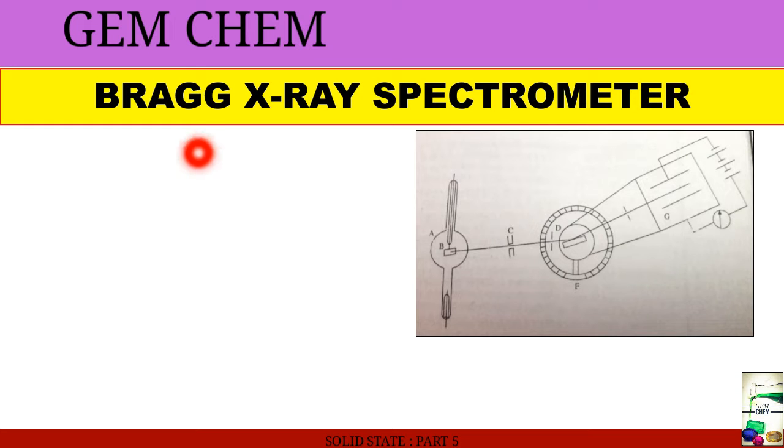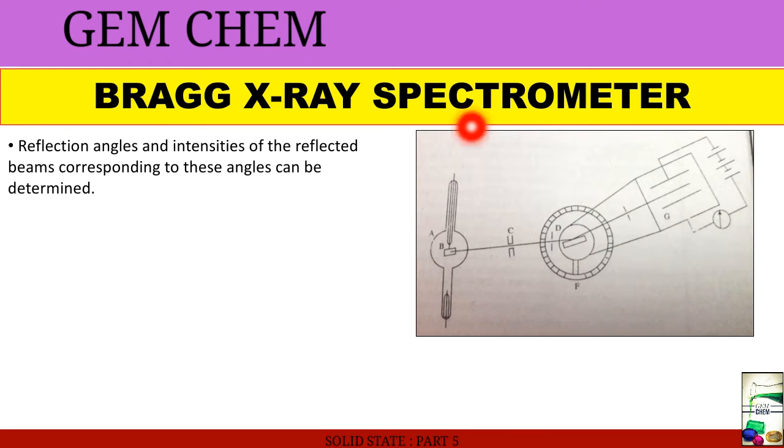We have previously dealt with Bragg's law or Bragg's equation. Now we will see the experimental setup for it, and the experimental setup was Bragg X-ray spectrometer. It looked like this. Using this spectrometer, reflection angles theta and the intensities of the reflected beams corresponding to these angles can be determined.